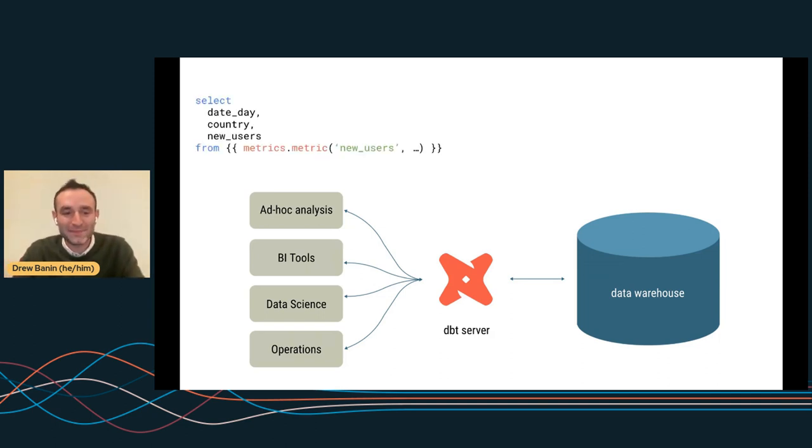Okay. Here's an example query. What we're going to do is we're going to select new users by country and day. And the thing we're looking at in particular here is just a macro. It's a macro called metric and a package called metrics, limited amounts of magic here. It's a macro that generates SQL. dbt is very good at that. And so if we run this query from either an ad hoc analysis tool or BI tool or data science notebook, whatever it is, dbt and specifically the dbt server can compile this query, execute it against the database and give you back a table of data that has those dimensions, that specified time grain for that metric, new users in this case.